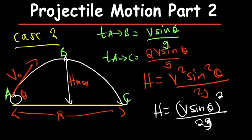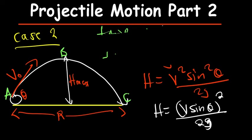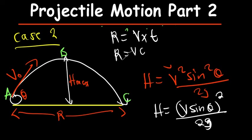The last thing we talked about yesterday was the range. The range is equal to vx times t. According to SOH-CAH-TOA, vx is v·cosθ, times t. The time you use is the time from A all the way to C — that is the total time.